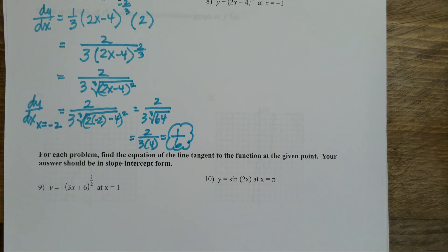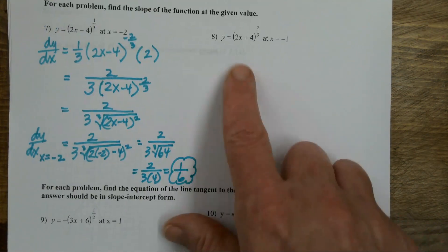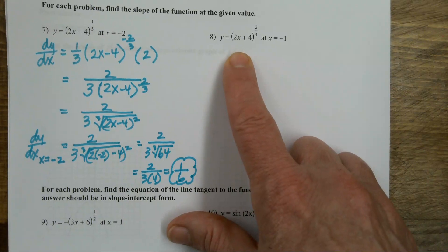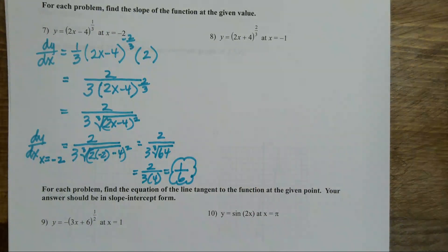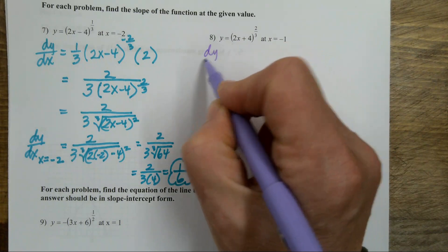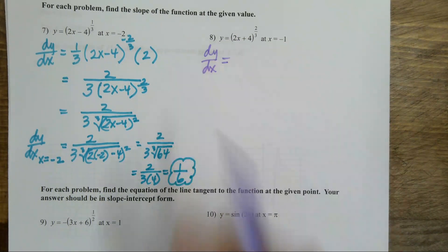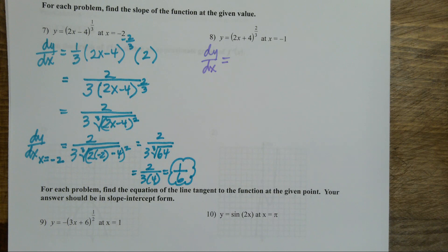My next one deals with what happens if I don't have a perfect cube — what happens if everything doesn't come out beautiful? I'm going to start this one the same way. Very similar-looking problem, a couple of minor changes. dy/dx — got a chain rule going on here.